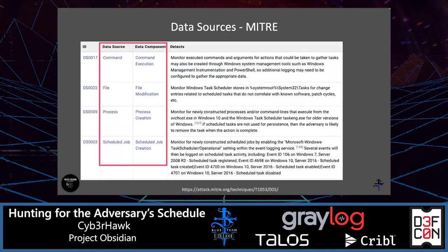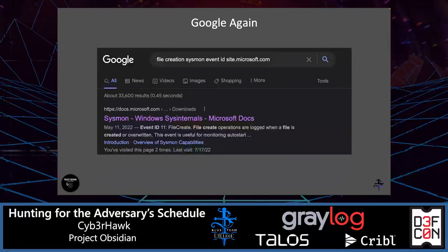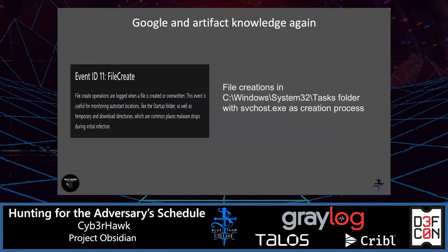The second thing we see is file modification — specifically file creation events. MITRE says these occur in the System32 Tasks folder for paths not related to a software or path cycle. We'll search for Sysmon data for this, as it's being rolled out in enterprises as a cheap version of EDR. When searching 'file creation sysmon,' event ID 11 is related to file creation. These events happen in the tasks folder under the svchost.exe process specifically.